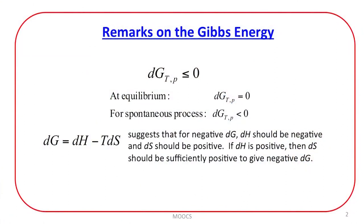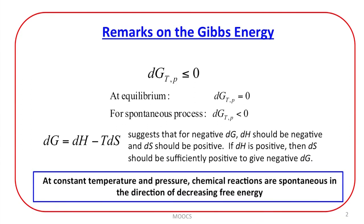For a small change, dG is equal to dH minus T·dS. For dG to be negative, that will be supported by a negative value of dH and a positive value of dS. However, even if the reaction turns out to be endothermic — if dH is positive — then there has to be a sufficient increase in the entropy of the system; that is, dS should be sufficiently positive so that minus T·dS overcomes dH to give a negative value of dG. Therefore, at constant temperature and pressure, chemical reactions are spontaneous in the direction of decreasing free energy.